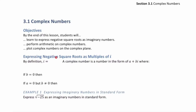Expressing negative square roots as multiples of i. By definition, i is the square root of negative 1. By this definition, if we square i, we also end up with negative 1 in the square root squared, which is just negative 1. So i squared is negative 1.